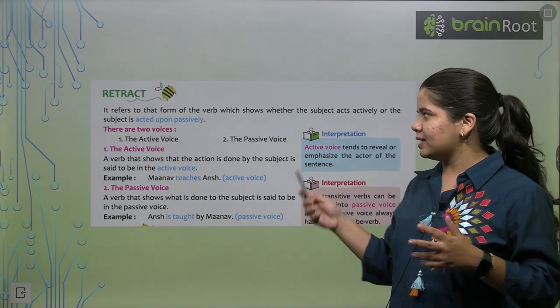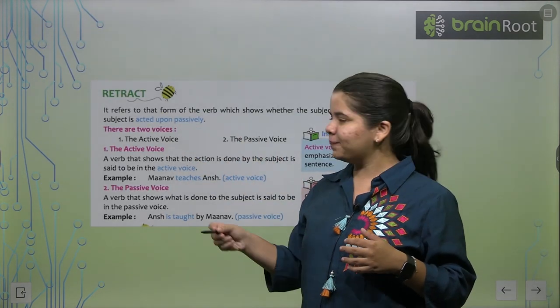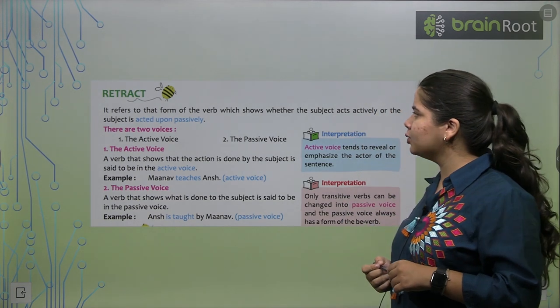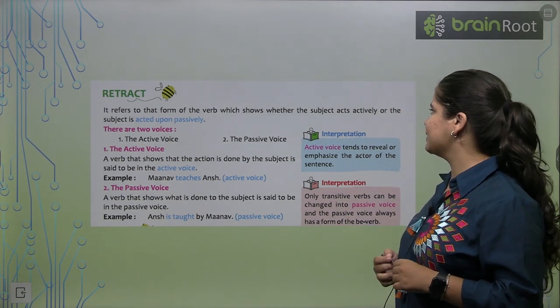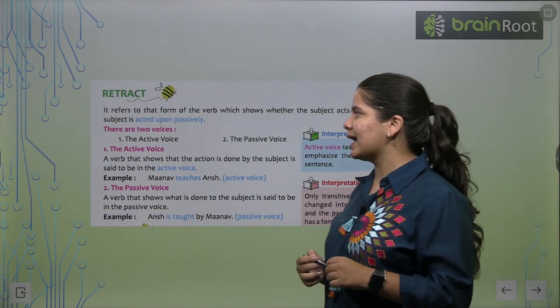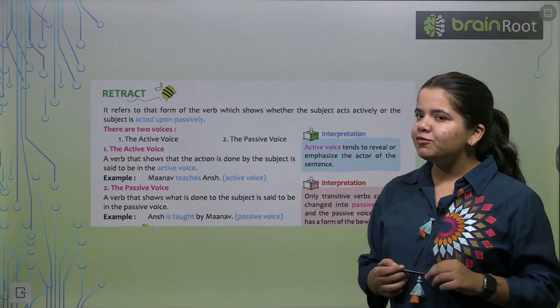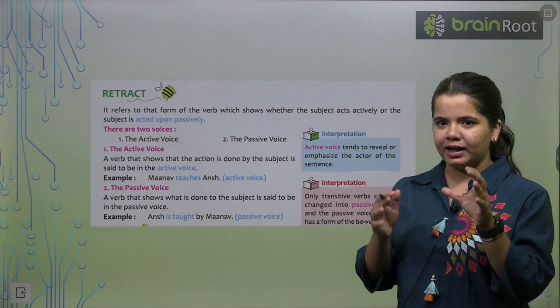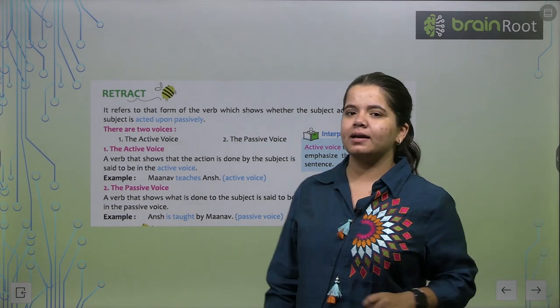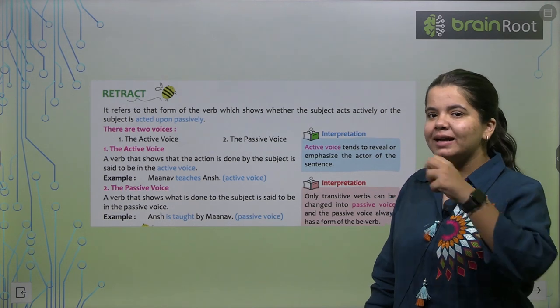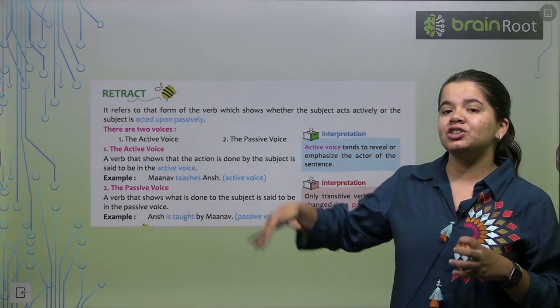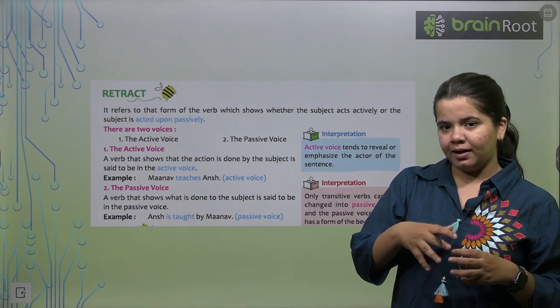Active and passive voice. First, we'll see the definition. It refers to that form of the verb which shows whether the subject acts actively or the subject is acted upon passively. What does this mean? What does active mean? That the subject, for example, the one we are talking about, are they actively conveying their thing themselves or are they conveying through something else?